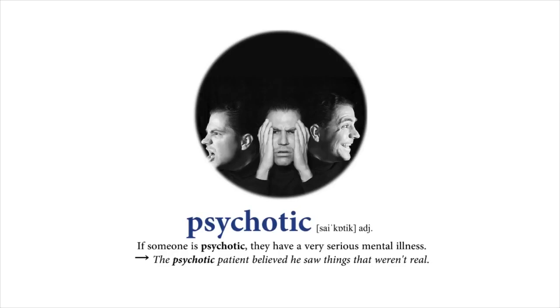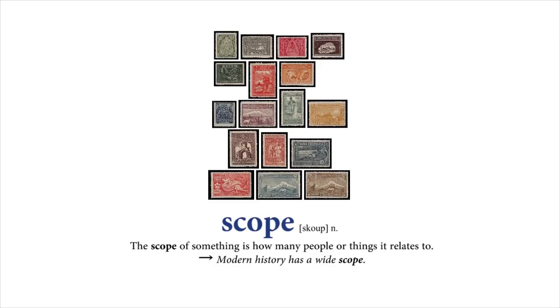Scope: The scope of something is how many people or things it relates to. Modern history has a wide scope.